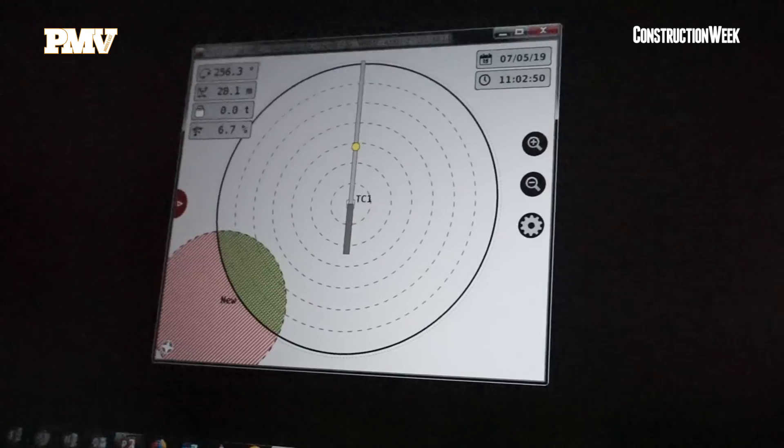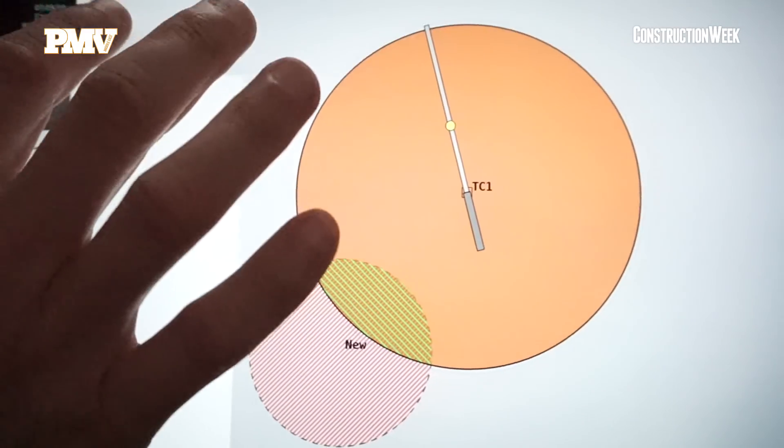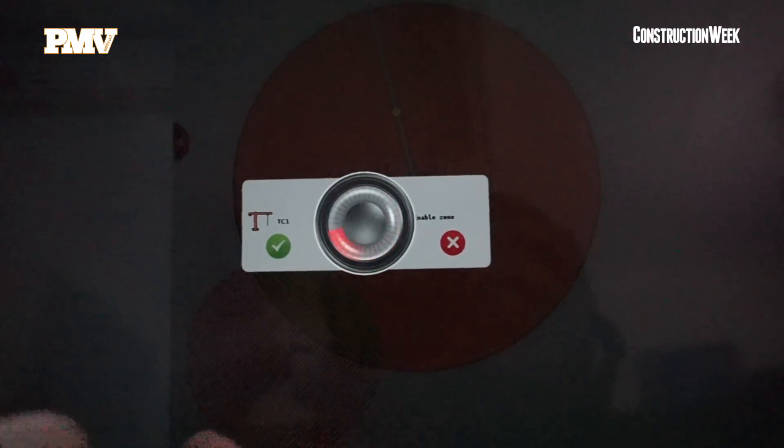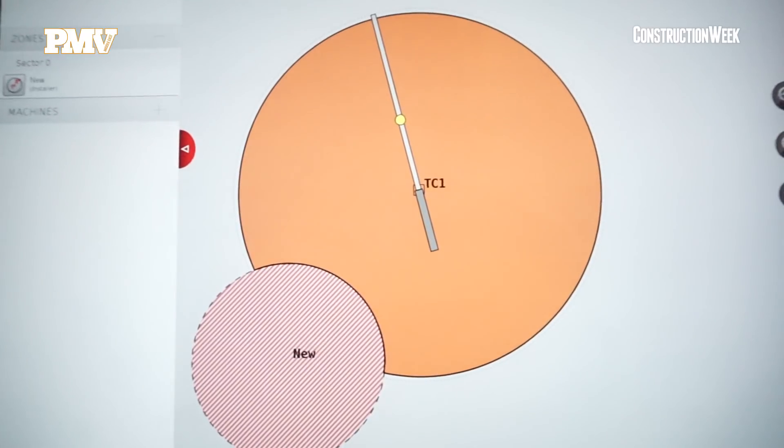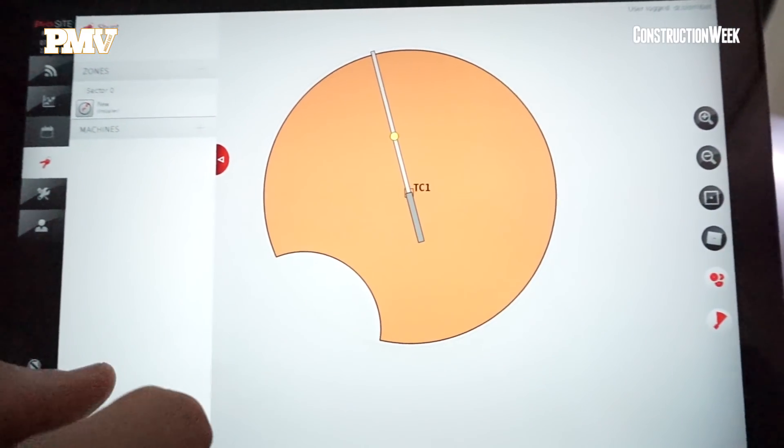So now I'm going to put it back on actually because it was bypassed before. And on the system, I can see that the area actually now is protected.